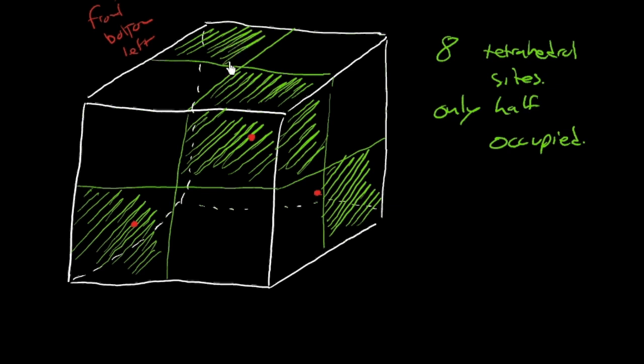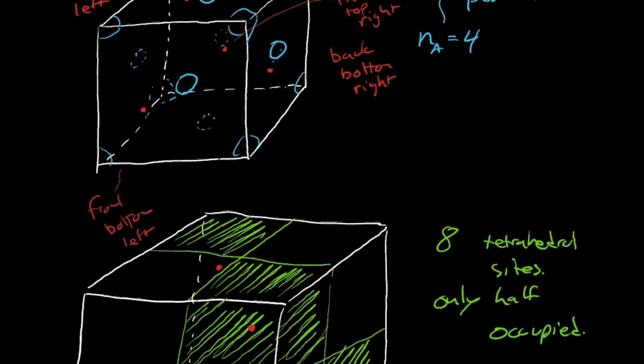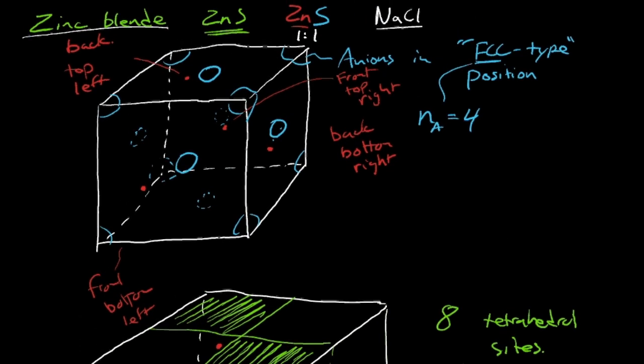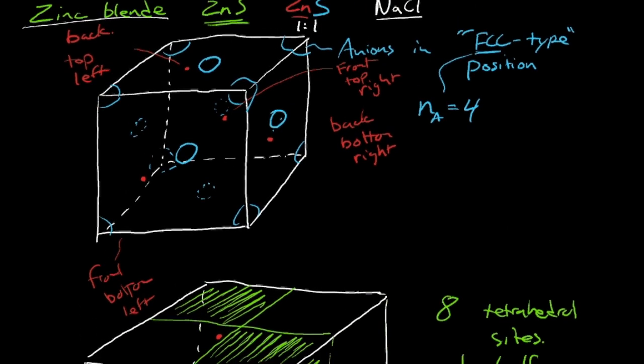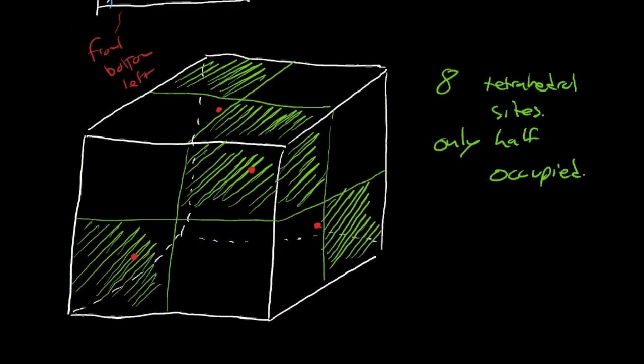And by only occupying half, you maintain the stoichiometry. That's one to one anion to cation. And so that's the zinc blende crystal structure. OK, there it is. Zinc blende crystal structure face-centered cubic positioning of anions with cations in tetrahedral sites, only half of them, and they're staggered spatially.